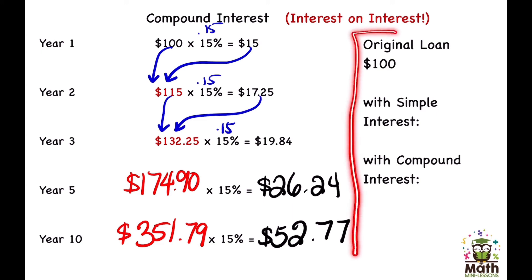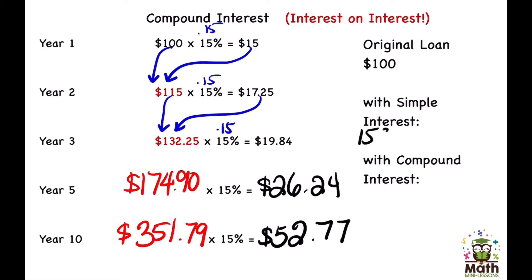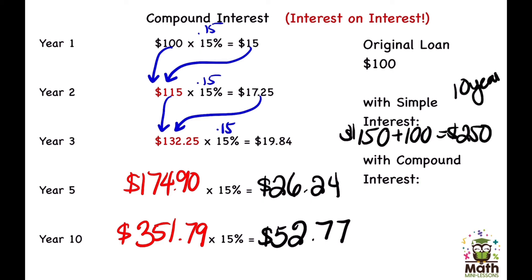Let's do a comparison: you lent $100. With simple interest at 15%, he pays $15 every year for ten years — that's $150 in interest plus the $100 loan, so you get $250 total. With compound interest over ten years, you would actually get $404.56 for lending just $100. That $100 has grown to over four times its size — that is the power of compound interest.